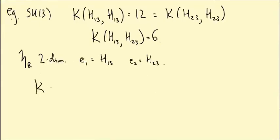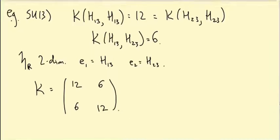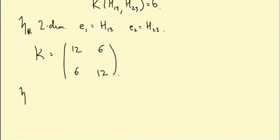So I'm going to use this as my basis. So I'm interested in little h_R. This is two dimensional. In this example, and it has basis e_1 equals H_13, e_2 equals H_23. So in other words, the matrix that I was calling K is (12, 6; 6, 12). So on the dual space, h_R dual, K star is given by the inverse of this matrix. So that's one over the determinant, which is like one over 108. I think it doesn't really matter. This factor isn't going to affect the angles between vectors, and then times (12, -6; -6, 12).